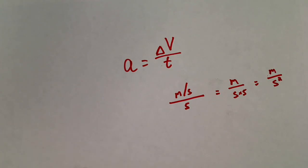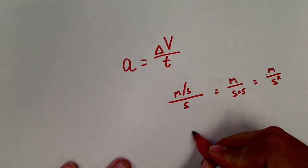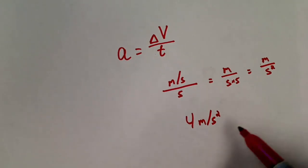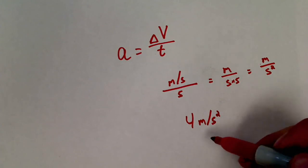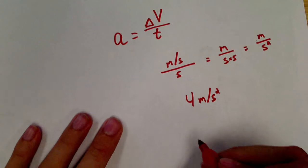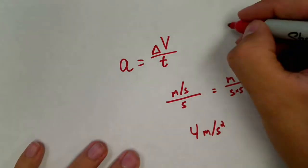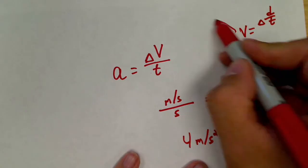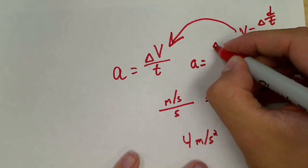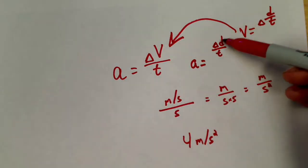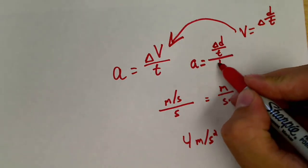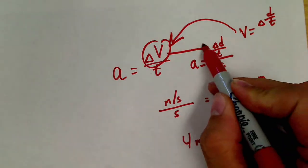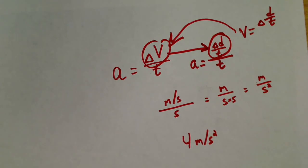Don't let that squared confuse you — it's letting you know that time is coming up more than once. So when you have a number like 4 meters per second squared, this isn't 16. The 4 does not get squared; the units are squared. Keep in mind that acceleration is delta v over t, but your velocity is a change in distance over time. So acceleration is really a change in distance over time squared — time comes up here twice. That's why the units are like that.